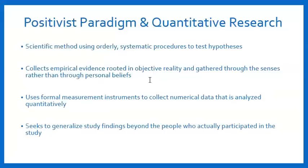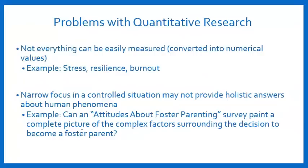Quantitative research requires formal measurement instruments such as surveys, questionnaires, and observation checklists to collect numerical data, which is then analyzed using statistical analysis to test hypotheses and answer research questions. The whole point is to find answers that we can generalize beyond the people in our study. For example, studying 150 people with neuropathic diabetic foot ulcers, we hope to find generalizable data applicable to all type 2 diabetics with neuropathic ulcers — not just those 150 in the study.